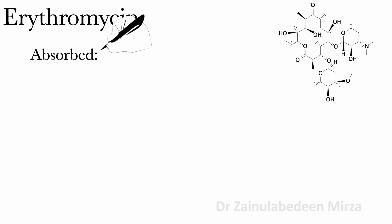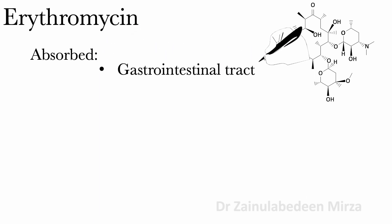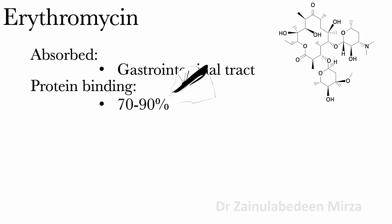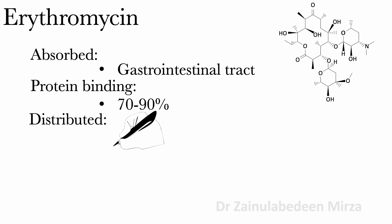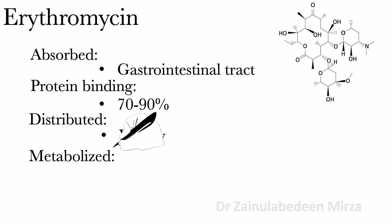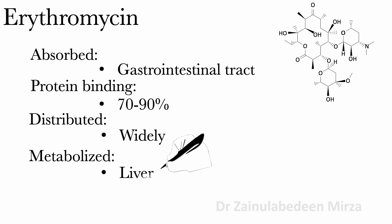Erythromycin is absorbed from the gastrointestinal tract. Protein binding of erythromycin is about 70 to 90% and it is widely distributed. Erythromycin is metabolized in the liver and is secreted in the feces.